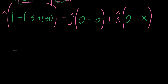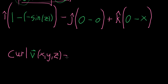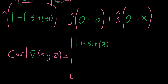Simplifying, the curl of our vector field as a function of x, y, and z equals: the i component is 1 minus negative sine of z, which is 1 plus sine of z. The j component involves subtracting off zero, so the entire y component of the output is zero. The k component is zero minus x, so that's negative x. And that's the curl of the function.